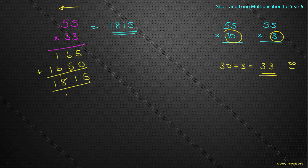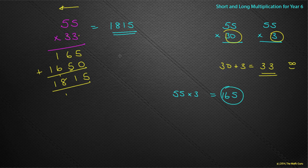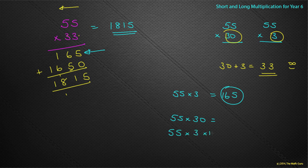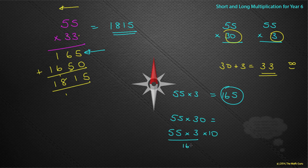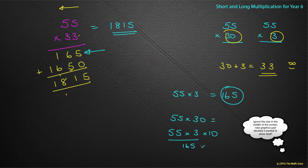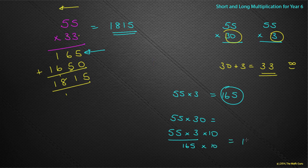Could we have done this in our head? Maybe. 55 times 3: 55 plus 55 is 110, plus 55 is 165. Yes — there's my 165. And 55 times 30 is the same as 55 times 3 times 10. We already know 55 times 3 is 165, multiply that by 10 and we get 1,650. Add them together and we get 1,815. This stuff is awesome.